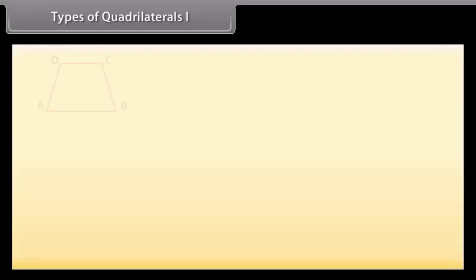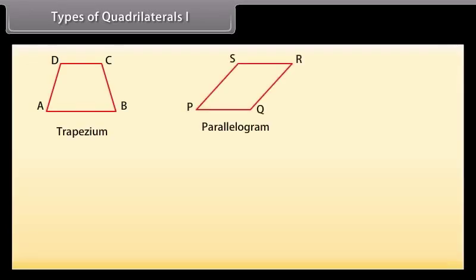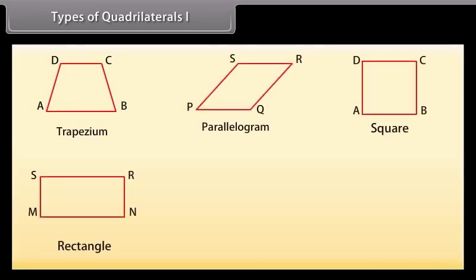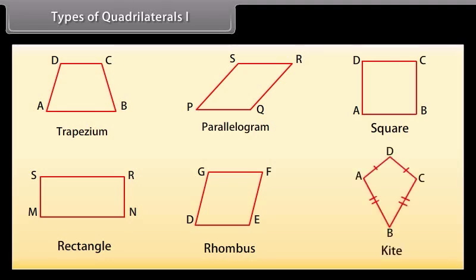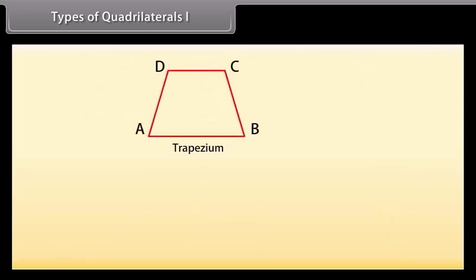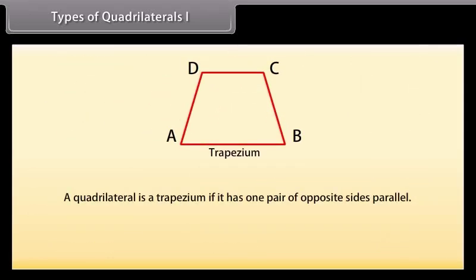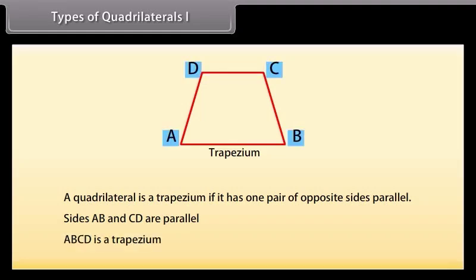Types of quadrilaterals: There are different types of quadrilaterals like trapezium, parallelogram, square, rectangle, rhombus, and kite. We will go through them one by one. First is trapezium. A quadrilateral is a trapezium if it has one pair of opposite sides parallel. Here, opposite sides AB and CD are parallel, so ABCD is a trapezium.